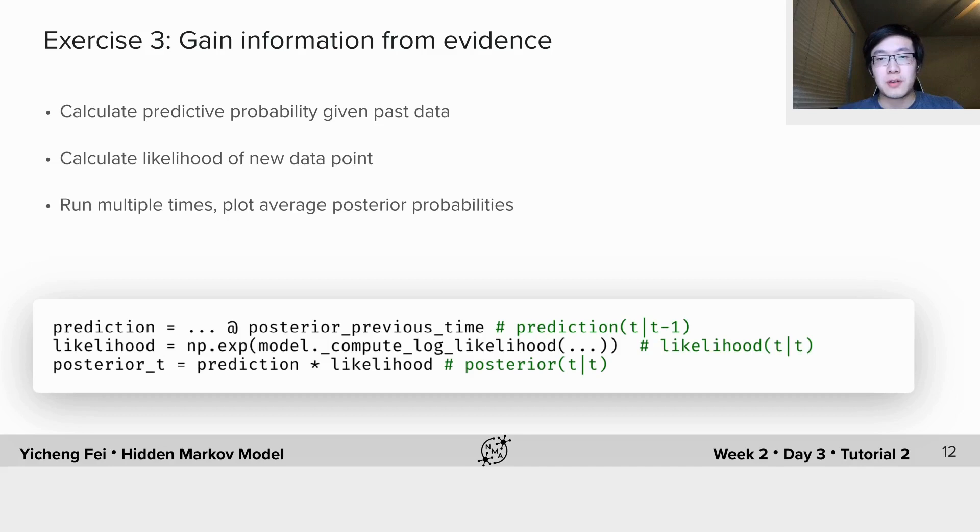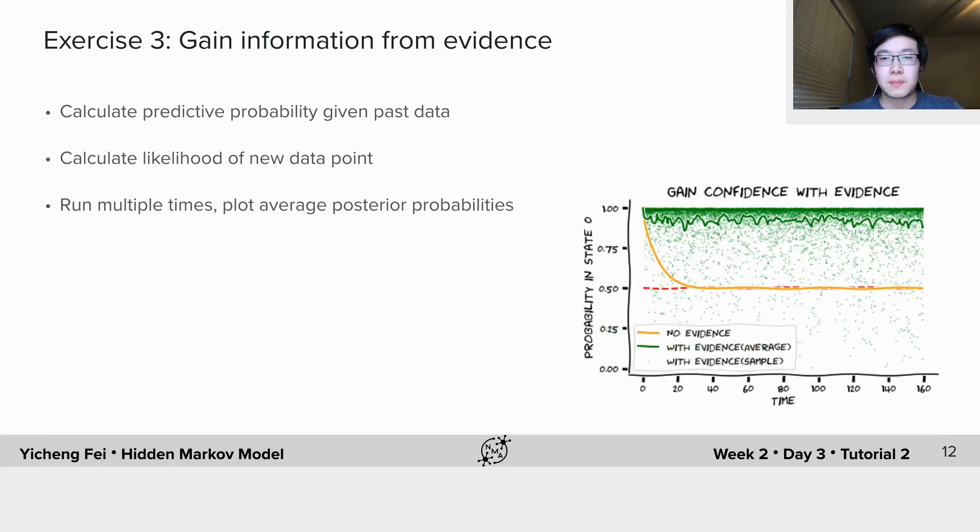After finishing this, you should be able to get a plot like this. As you can see, the posterior probability of staying at 0 will be close to 1 with low transition rate and small noise.